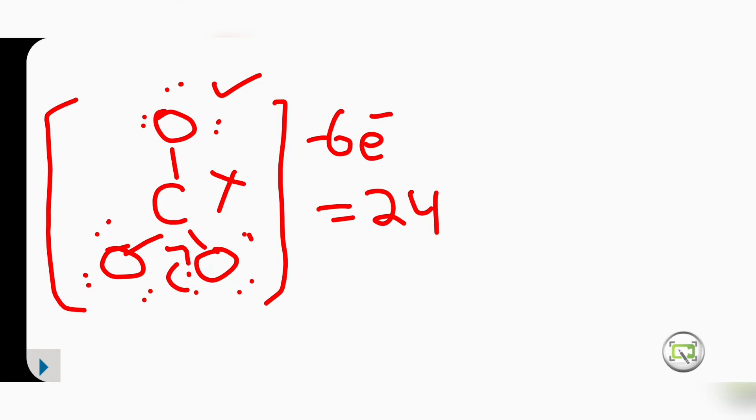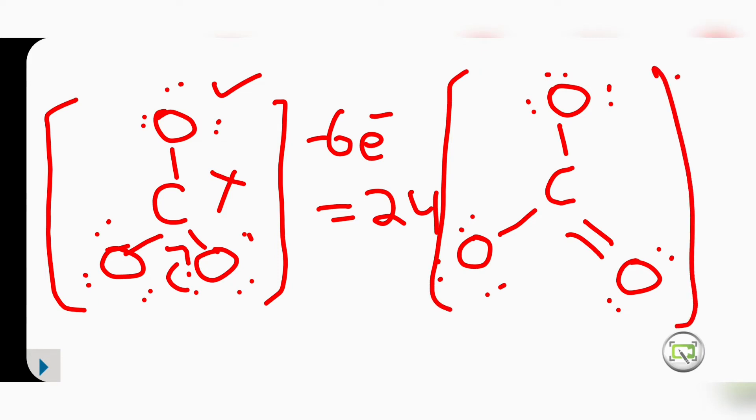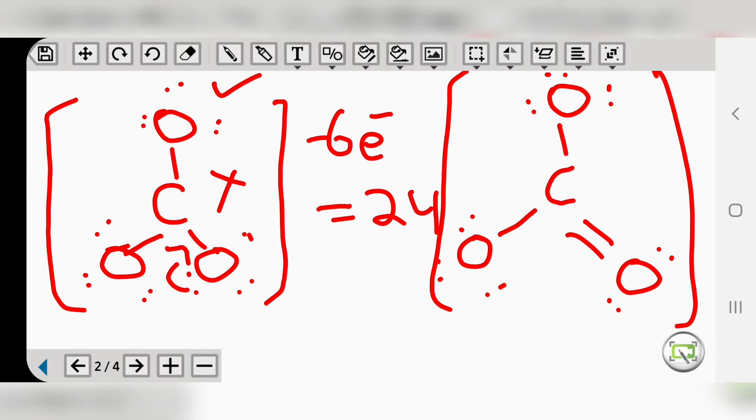What we have to do is make one lone pair from oxygen into a double bond. Here you can see we are making the double bond, and now this oxygen will have two non-bonding pairs left while the others have three lone pairs each. This is the final structure of carbonate, which has a negative two charge.